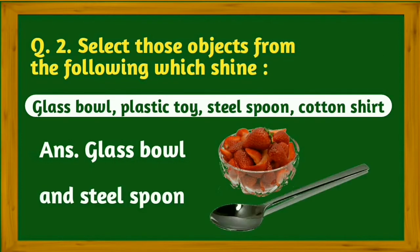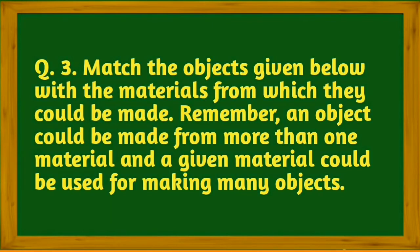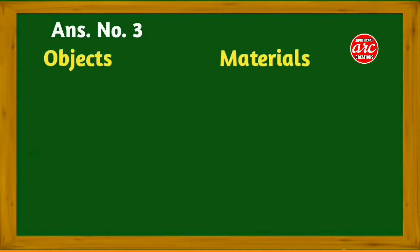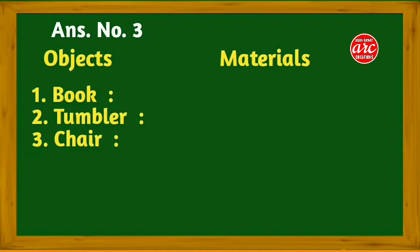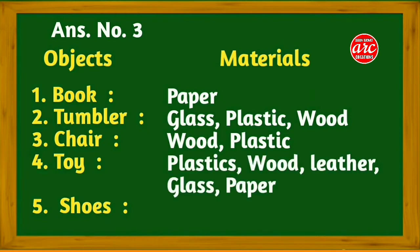Question number three: Match the objects given below with the materials from which they could be made. Remember, an object could be made from more than one material and a given material could be used for making many objects. Answer: Book - paper, Tumbler - glass plastic wood, Chair - wood and plastic, Toys - plastic wood leather glass paper, Shoes - leather and plastic.